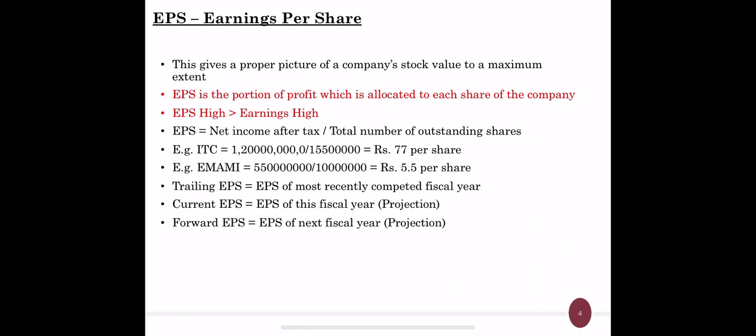There are three types of EPS: trailing EPS, current EPS, and forward EPS. Trailing EPS is the EPS of last year, current EPS is the EPS of this year, and forward EPS will be the EPS of next fiscal year. Current and forward EPS are just projections. The difference is that trailing EPS uses last year's actual net income after tax, while current and forward EPS use projected net income.